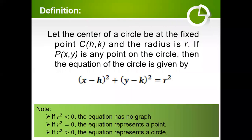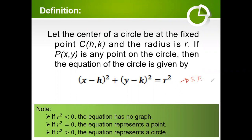So we have here our formal definition of a circle. Given a fixed point with coordinate C and radius r — take note, radius is distance, meaning r should be positive. If P is any point on the circle, this is our standard form of the equation. Notice that if r² is less than 0, then the equation has no graph, because we define radius as distance, and distance is always positive. So r² should always be positive.